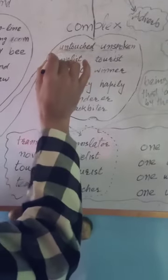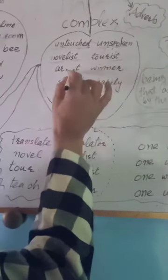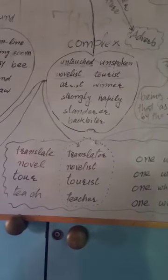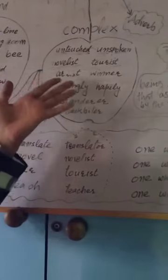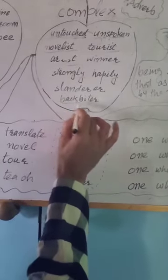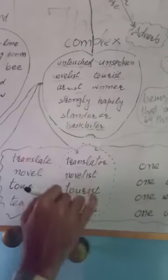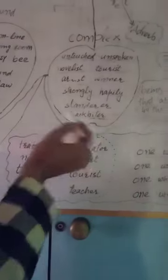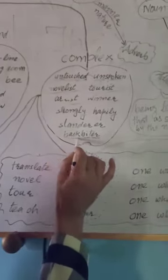A complex word has a meaningful independent part with a meaningful but dependent part attached to it. These dependent parts — like 'un' at the beginning or 'ist' and 'ly' at the end — are called affixes. Complex words are formed when an affix is added to a word, whether simple or compound. For example, 'backbiting' is a compound word, but when the suffix '-er' is added, it becomes 'backbiter' — a complex word.